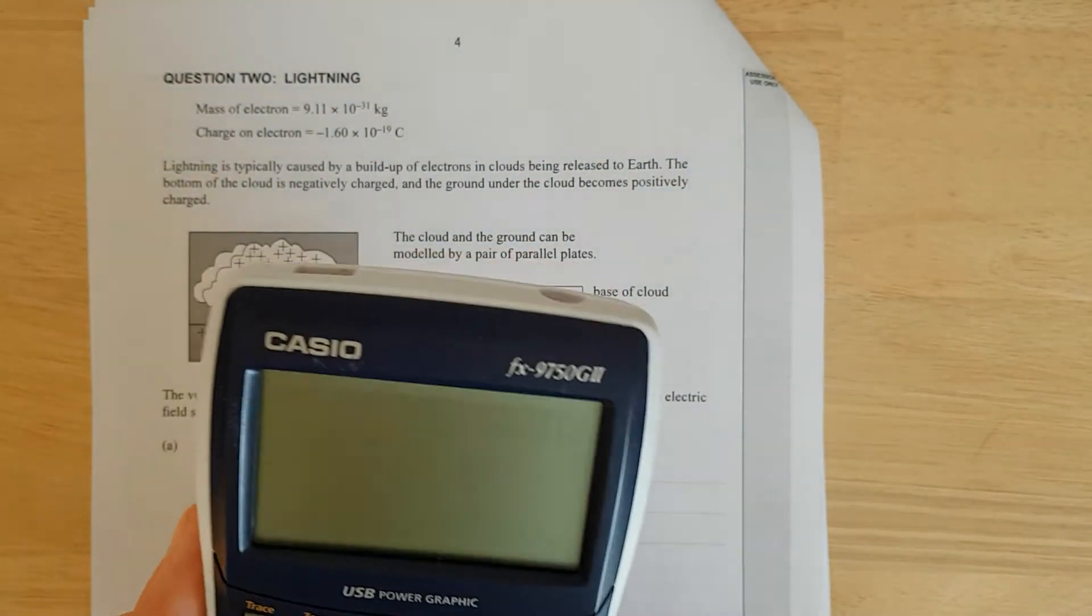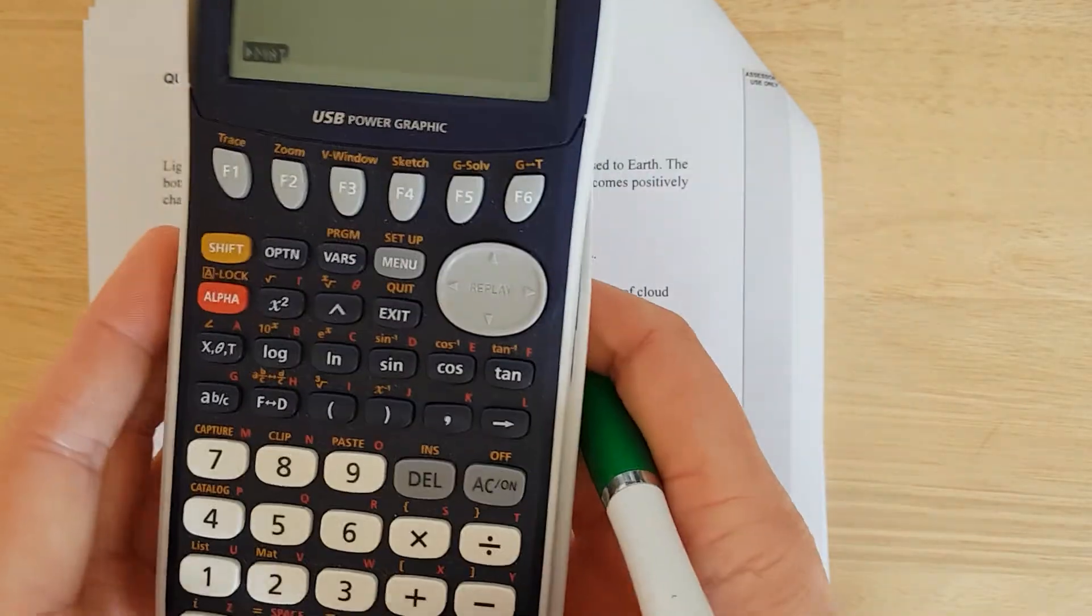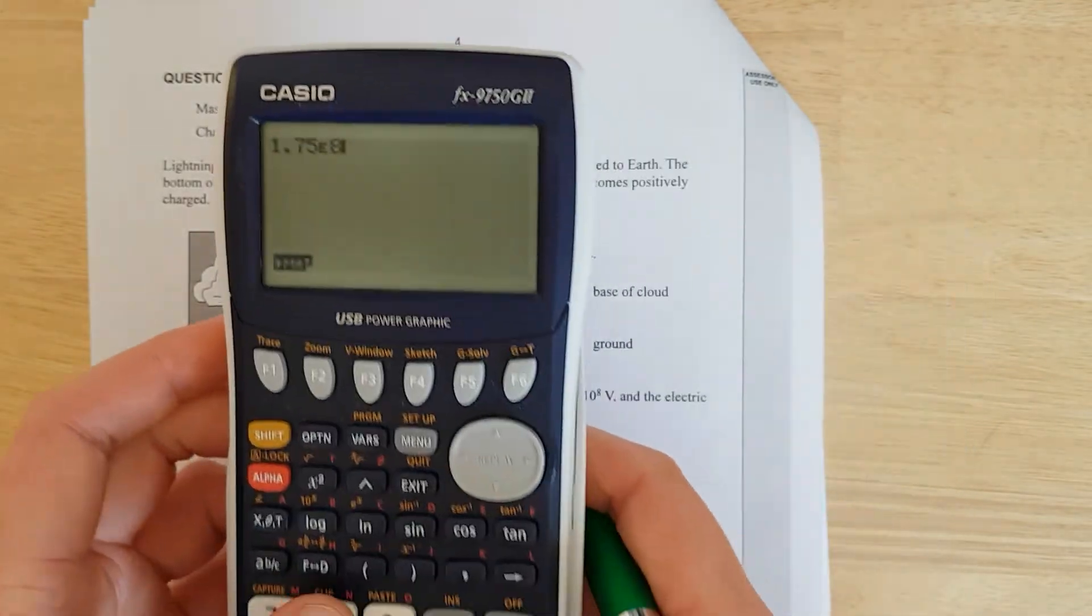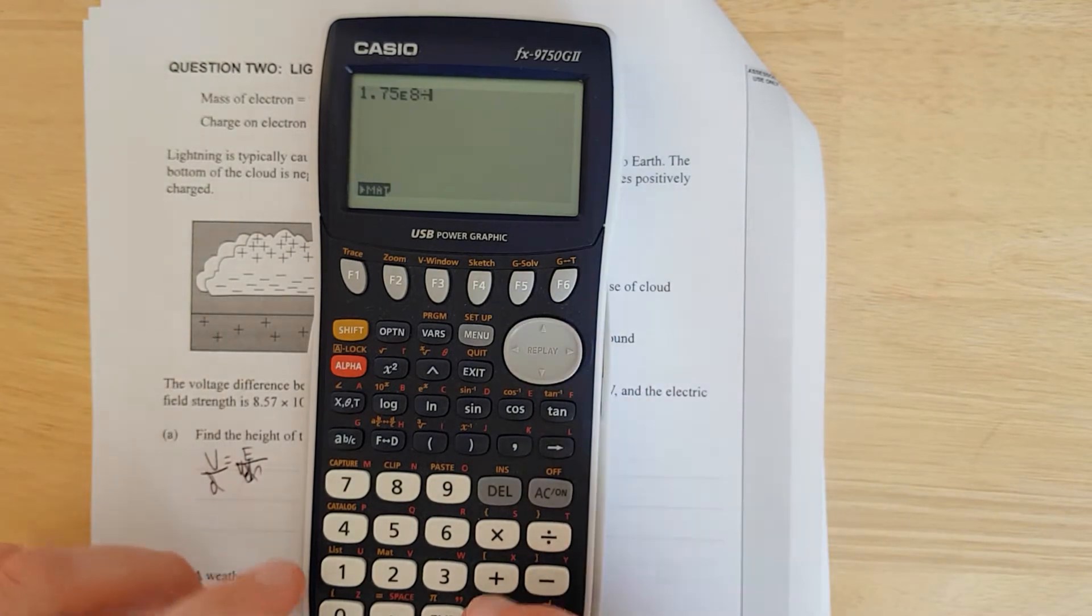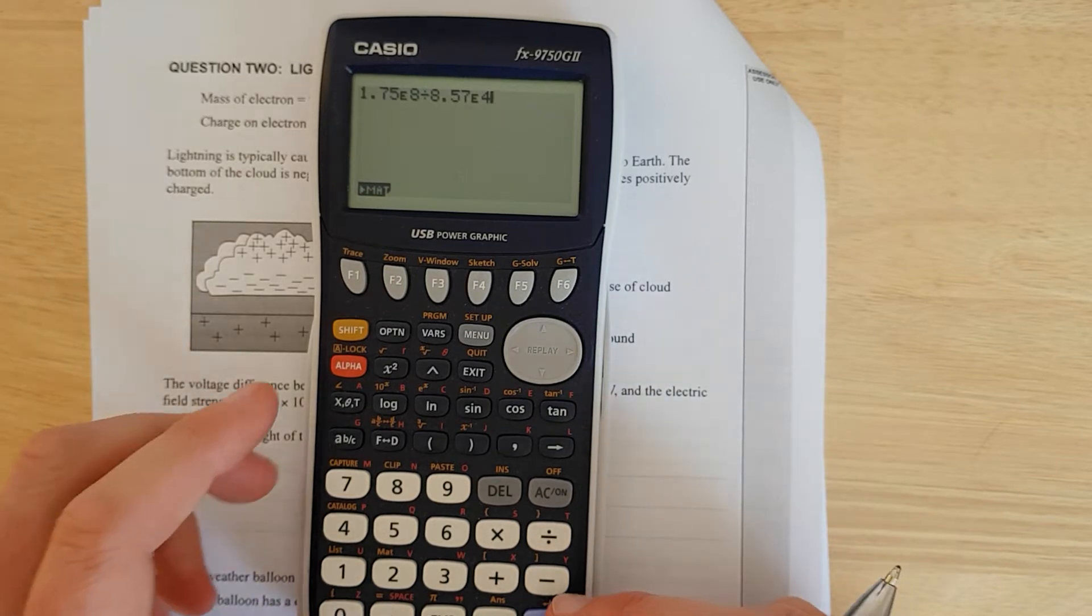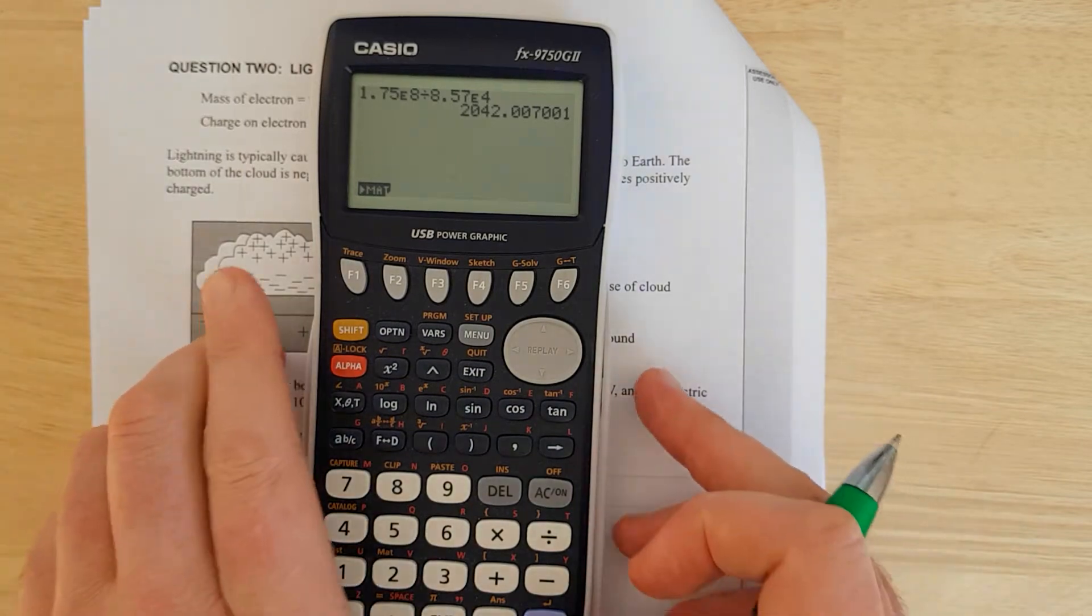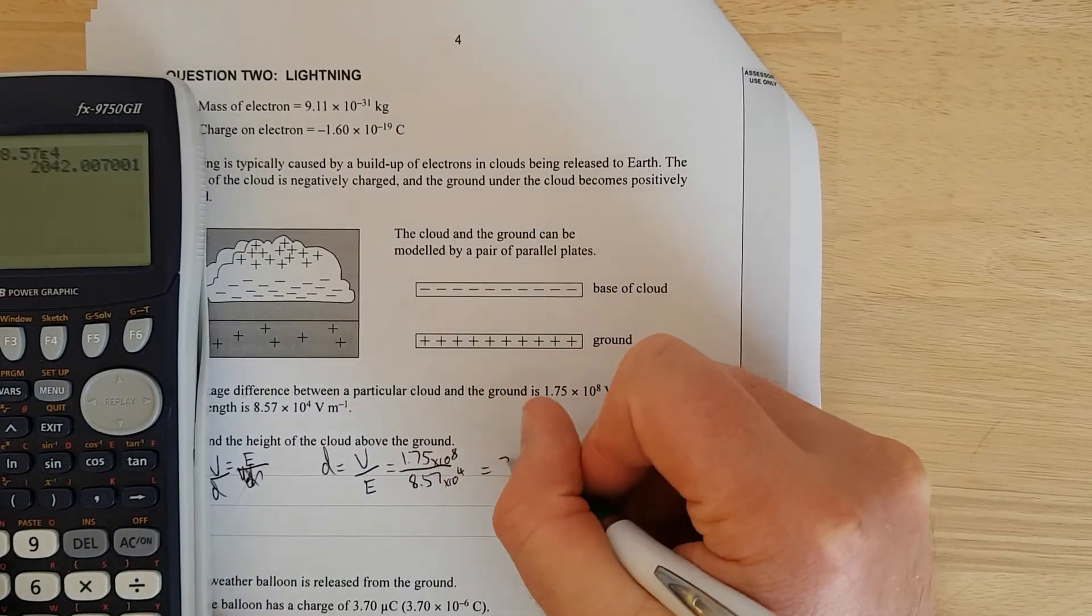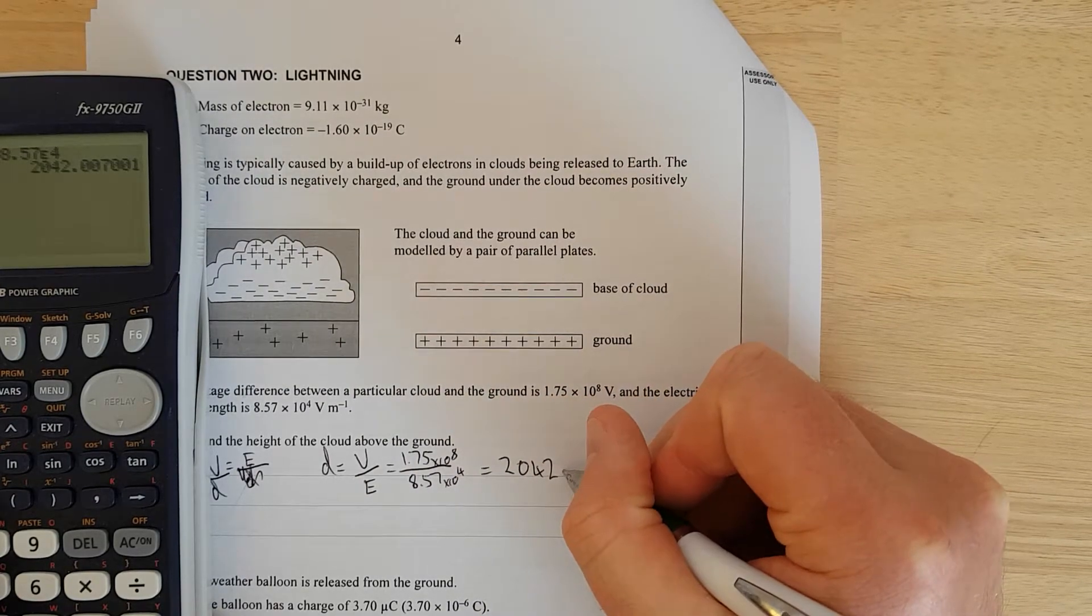On my calculator, I do 1.75 E, I hit that EXP button which goes E to the 8, and then divide it by 8.57 E to the 4. If I do E to the 8 and E to the 4, it's a lot easier than going times 10 to the power of, and it avoids syntax errors as well. We've got 2,042 meters.